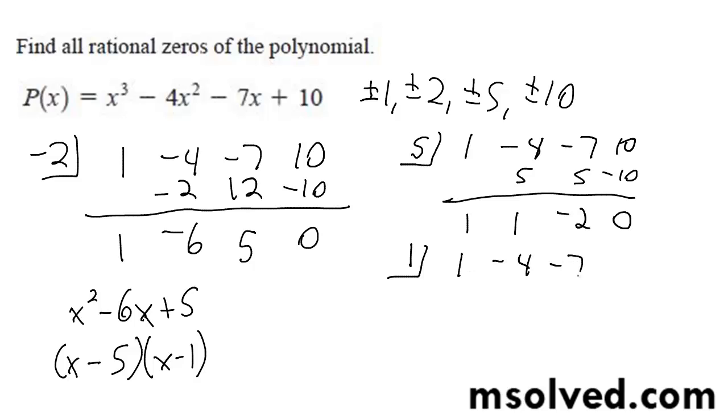1, negative 4, negative 7, 10. And that's it, so solutions are negative 2, 1, and 5. There you go.